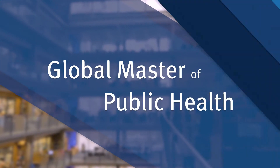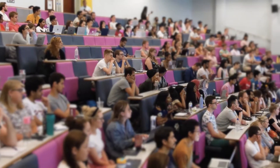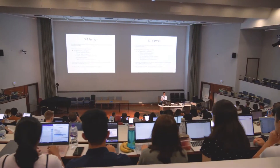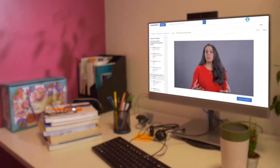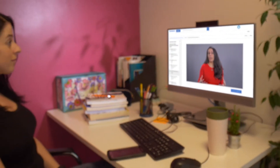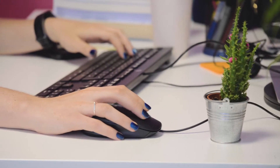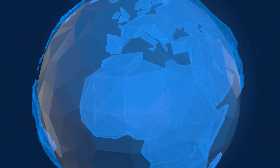This is why the School of Public Health at Imperial College London has developed the online Global Master of Public Health. This degree program takes the successful on-campus course and delivers it in a fully online experience over two years. Our aim is to increase the public health knowledge and skills base across the globe.